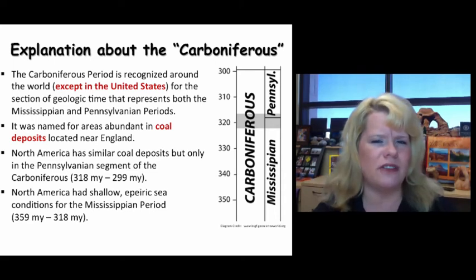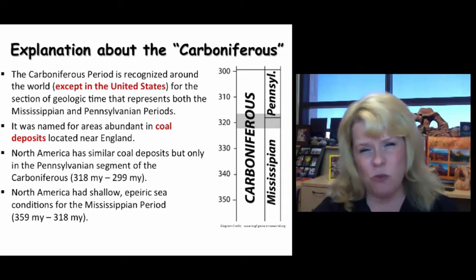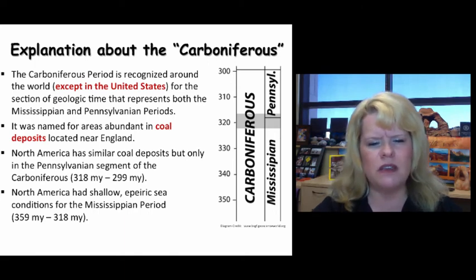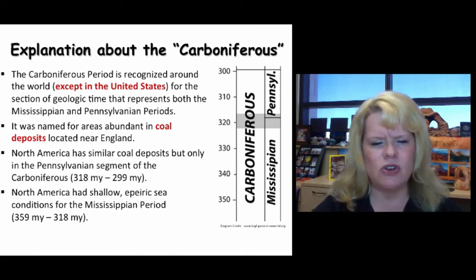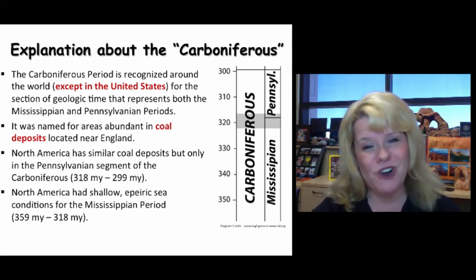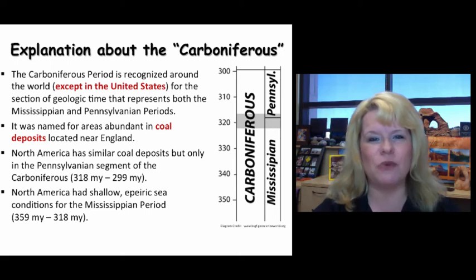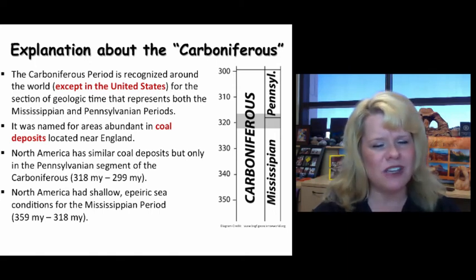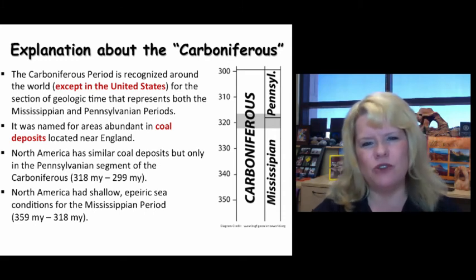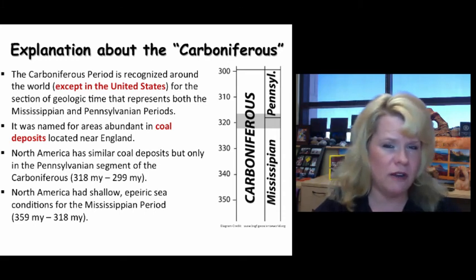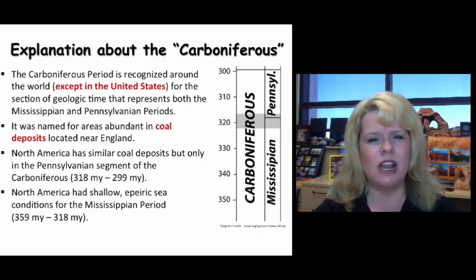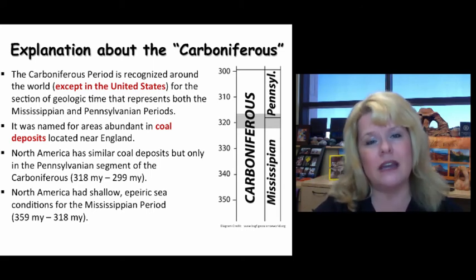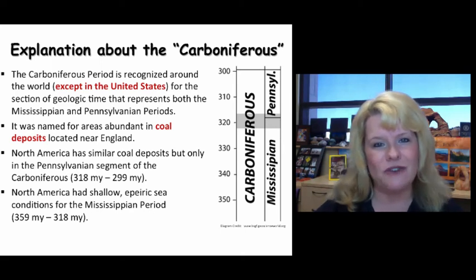Our time frame in the United States really only deals with coal producing in the Pennsylvanian, which would be the 318 million year to 299 million year time frame. For the Mississippian, we had something completely different from swamplands — we had Bahama-like conditions. We had shallow epeiric seas from the Kaskaskia that ranged from 359 million to 318 million. Oftentimes you'll read in literature about the lower Carboniferous and the upper Carboniferous. The lower refers to the Mississippian and the upper is the younger of the two, which is the Pennsylvanian.